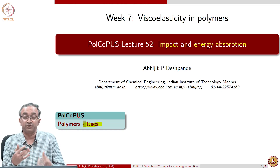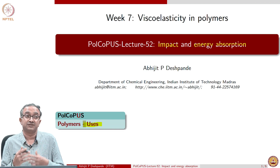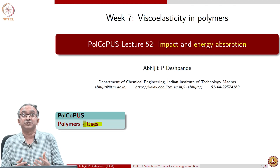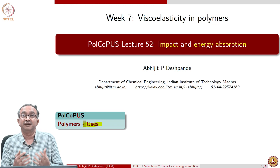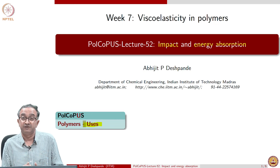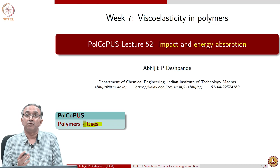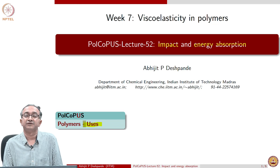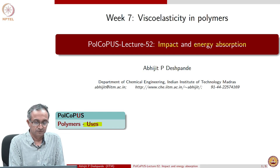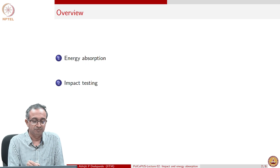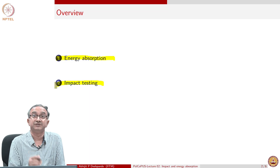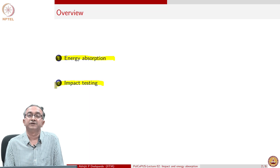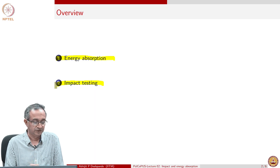The material should absorb the energy, and in some sense these are sacrificial materials. They absorb the energy, they might start fracturing, they might get damaged — but this is classically what is expected of a helmet also, which is an energy absorbing material on impact. Polymers are used very commonly in these applications because of their high impact properties. We will discuss these properties by examining the phenomena of energy absorption and then specific testing — impact testing — used to assess energy absorption capability in polymeric materials.